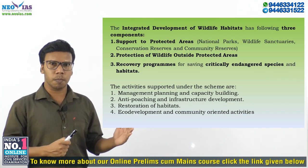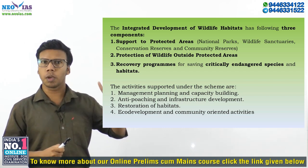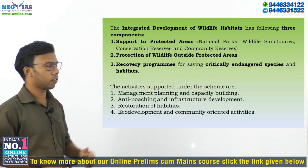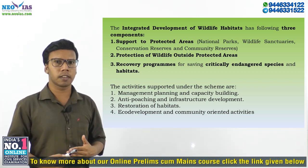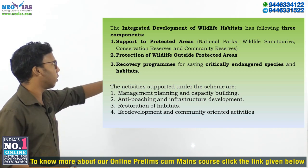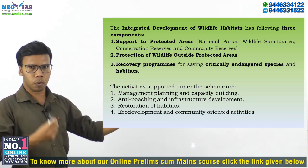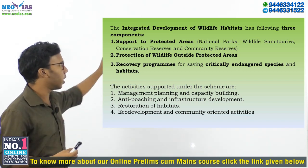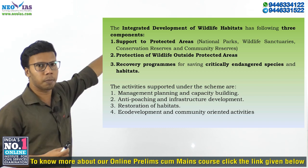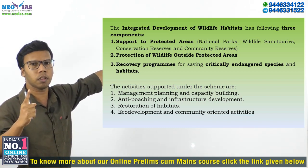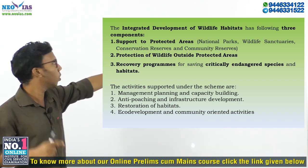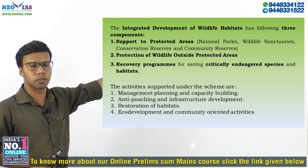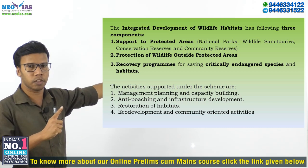The Integrated Development of Wildlife Habitat scheme has three components. The first component is supporting protected areas. We have protected areas like national parks, wildlife sanctuaries, conservation reserves, and community reserves. The support given by the Wildlife Division will be channeled to these protected areas through the IDWH scheme.